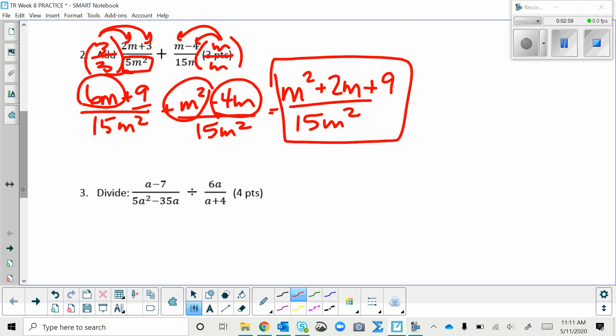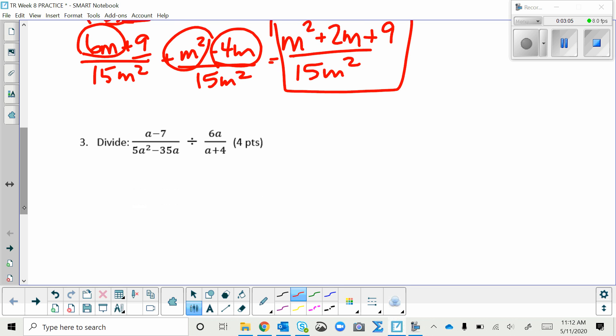The next problem is a keep change flip because of the division. I also want to factor this denominator right here using GCF. So I will keep the first fraction the same while also, meaning I'm not flipping the first fraction, but I am factoring the denominator. 5 and 35 have 5 in common. A squared and A have A in common, and the leftovers are A minus 7. And then I'm changing to multiplication and flipping the second fraction, and nothing in the second fraction can be factored, so everything stays the same.